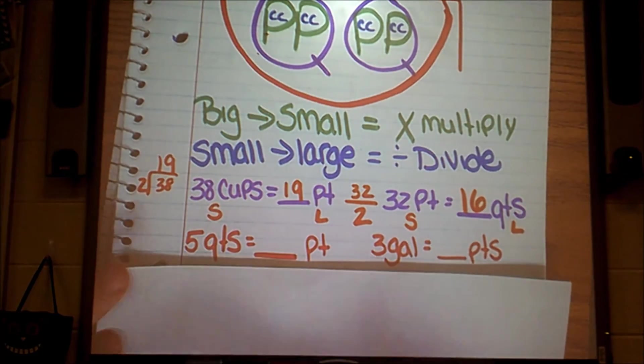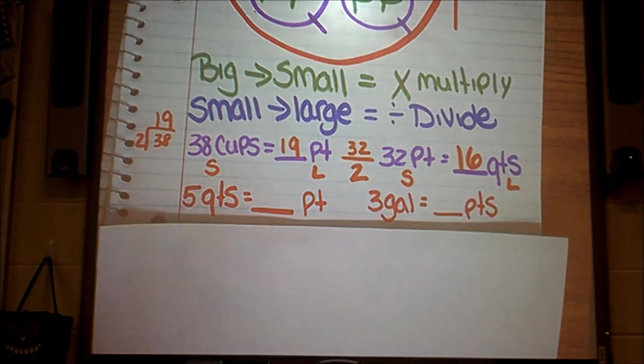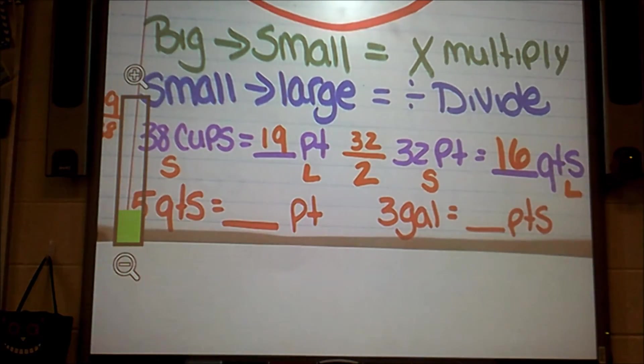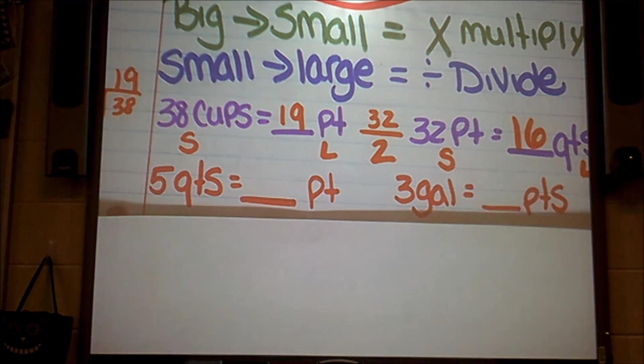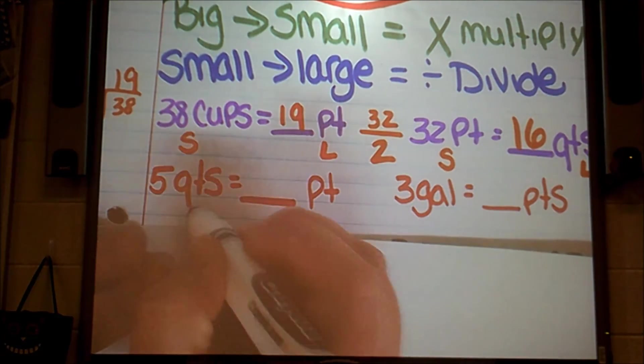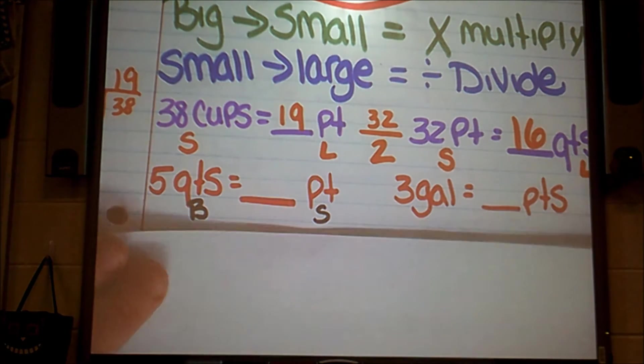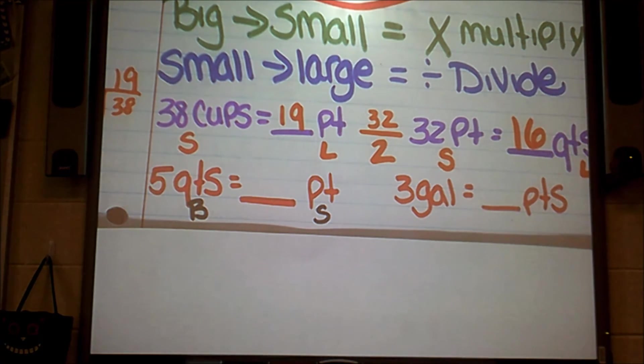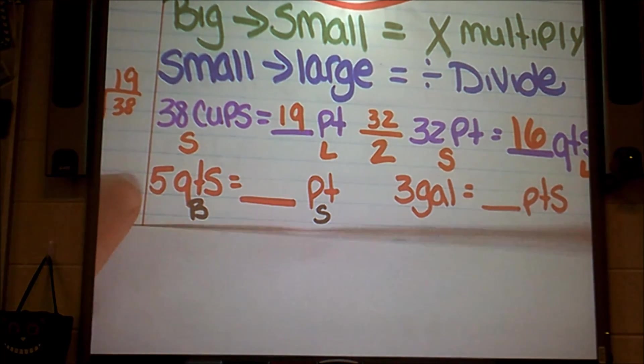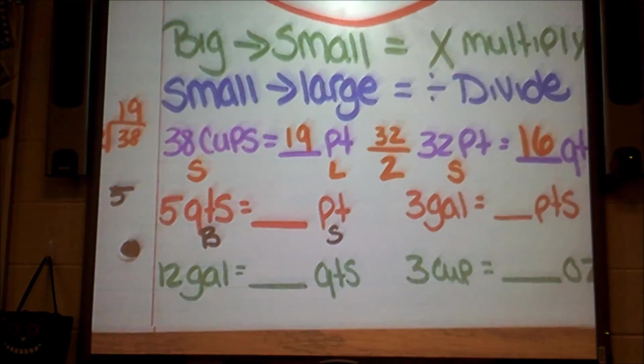But we're going to do a couple more together, and then I have a couple for you to do on your own. This next problem that I have here is we're going to be converting five quarts into pints. So again, look at your big G. What is bigger? A quart or a pint? You got it, Batman. My quart is much bigger than my pint. So if my quart is big and my pint is smaller, then I must be going big to small. We multiply.